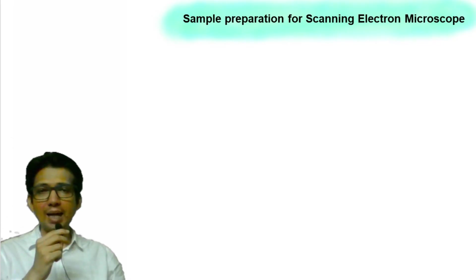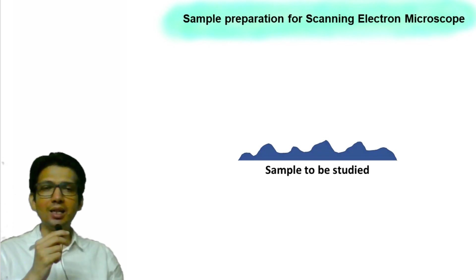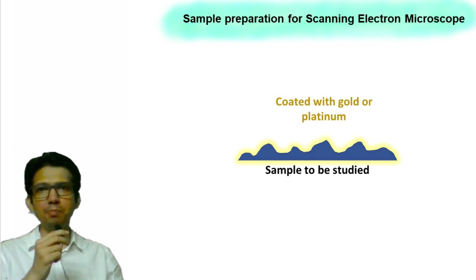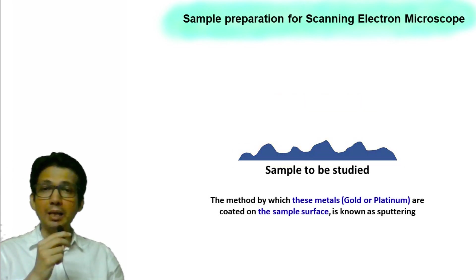In order to study a sample under scanning electron microscope, the sample is usually coated with metal such as gold or platinum. The method by which these metals are coated on the sample surface is known as sputtering.